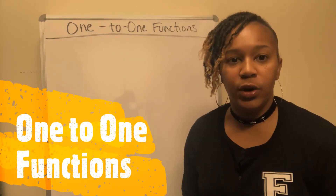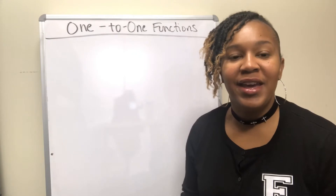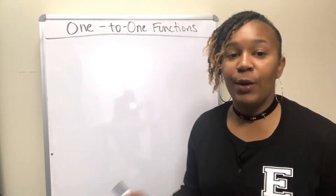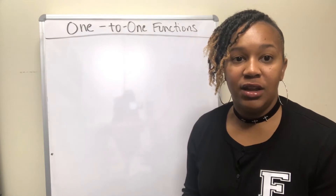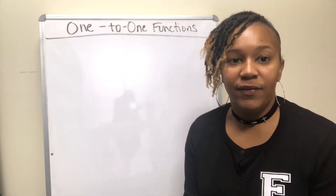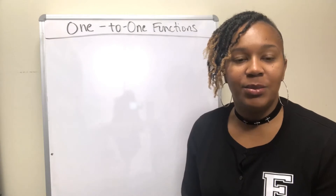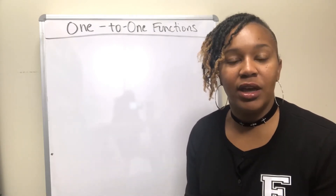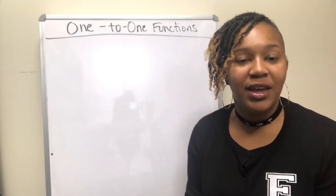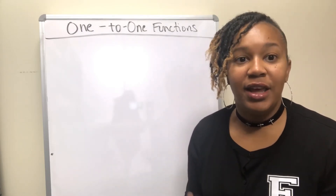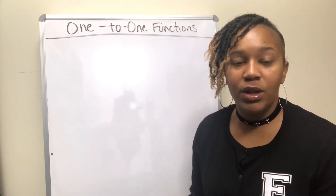In this video we're going to talk about one-to-one functions. Before we talk about one-to-one functions, let's recall what a function is. A function is a set of ordered pairs or a relation such that each element of the first set maps to exactly one element of the second set. For example, mapping cities to states is a function as long as each city maps to one state.